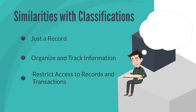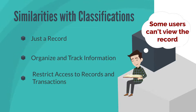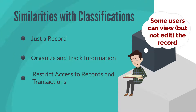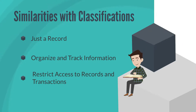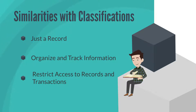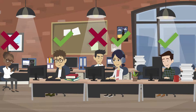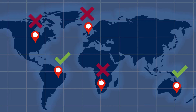A final key similarity with these classifications is that you can use them to restrict access to certain records and transactions. The type of restriction ranges from limiting which users can view certain records and transactions to allowing some users to view, but not edit, those records and transactions. Not only are certain records and transactions associated with specific classifications, but a user's relationship with those classifications would affect their access to those records and transactions. To return to our sales order example, you may want to restrict who can edit a sales order by what department the user works in or which location the user works from.